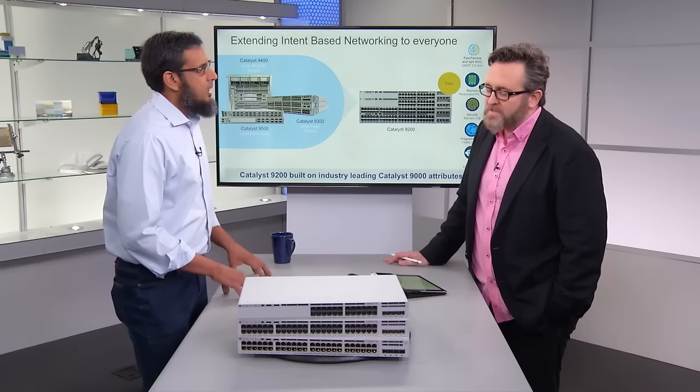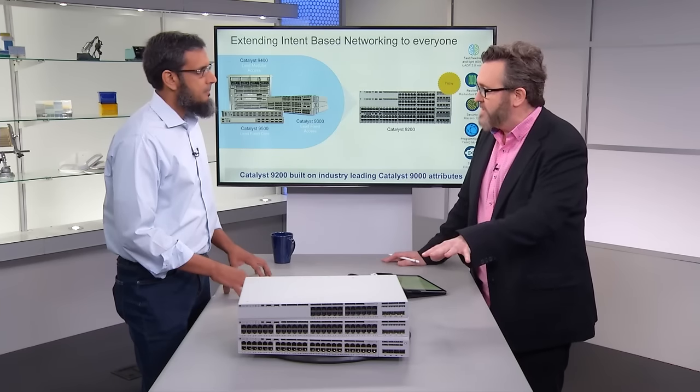We introduced the Catalyst 9000, which is powering intent-based networking. Now we are bringing the Catalyst 9200, which is going to go to a much broader set of deployments. Compared to the Catalyst 9300, which is richer in scale and capabilities, the Catalyst 9200 focuses on small and medium deployments as well as branch deployments. This is about broad network reach — getting a lot of ports out there, stacking them up for density, and covering what you need in most situations, especially from a wiring closet perspective.